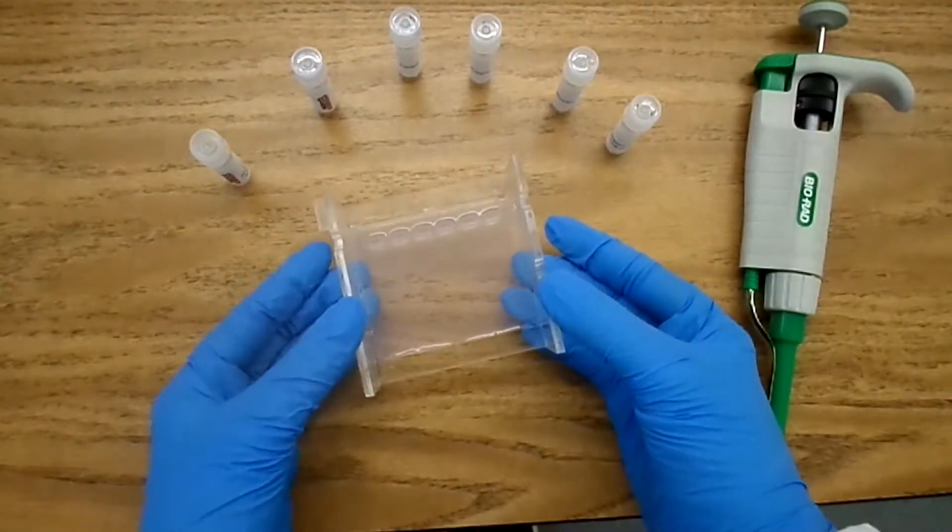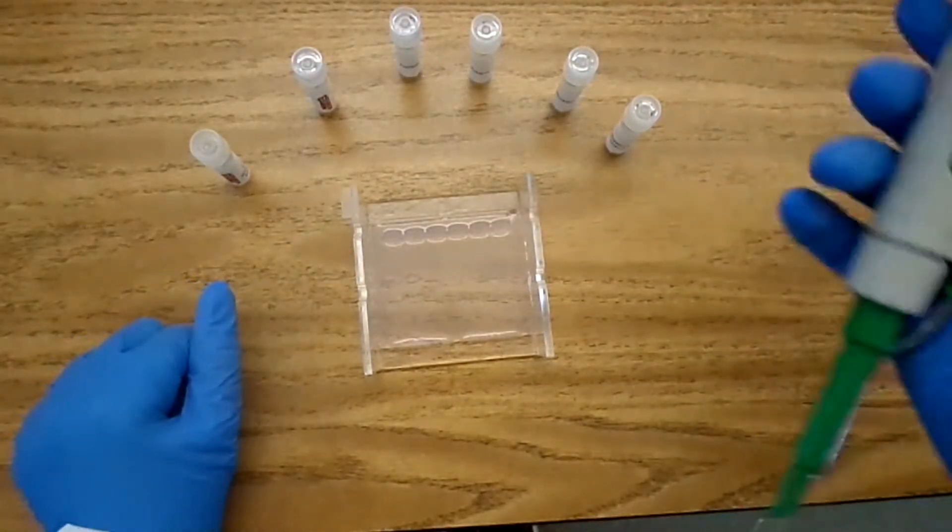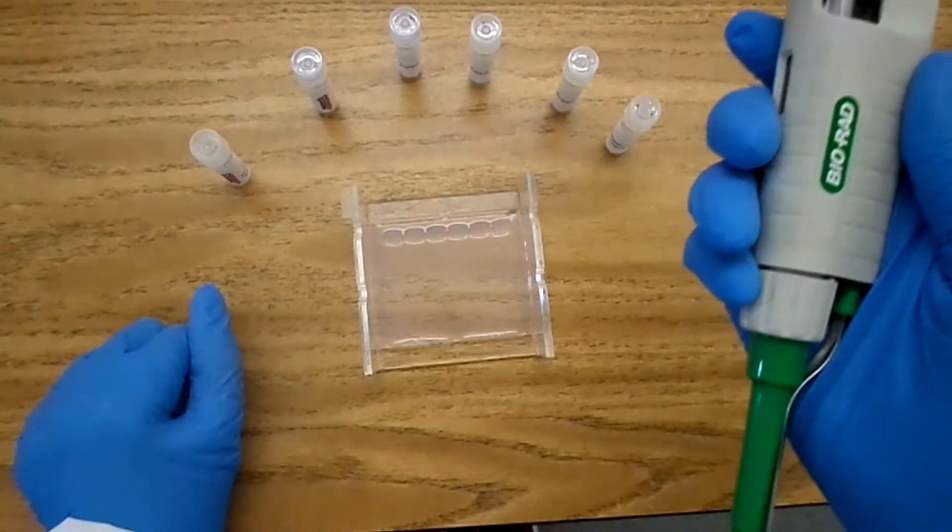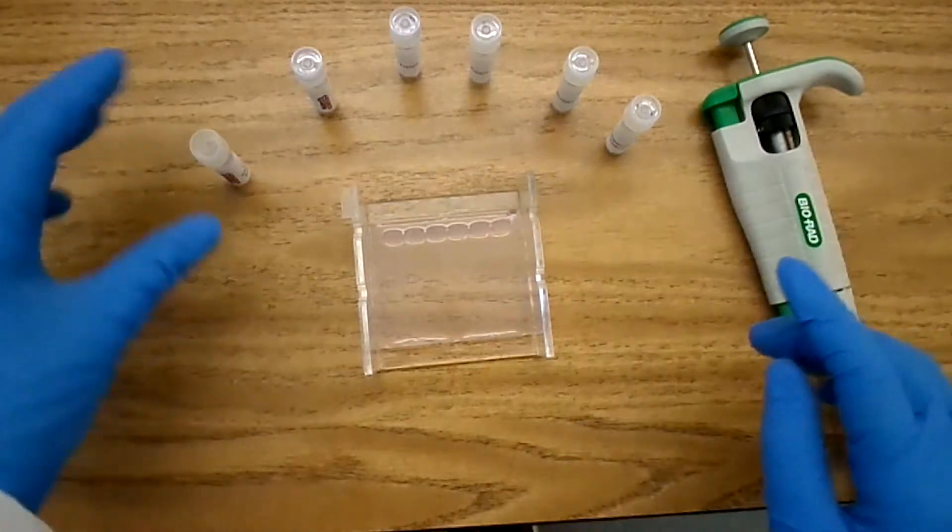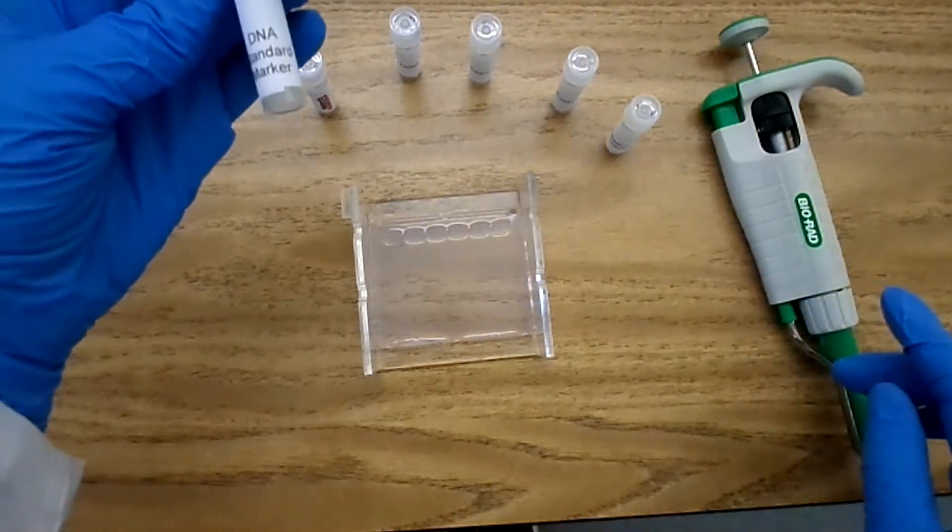This is our gel for the gel electrophoresis. We're going to be using a micropipette to load 10 microliters of each sample into the corresponding well. We'll start with the DNA standard marker.